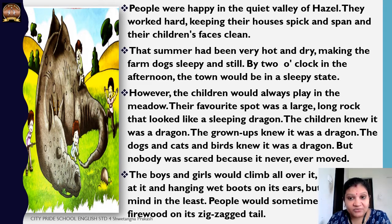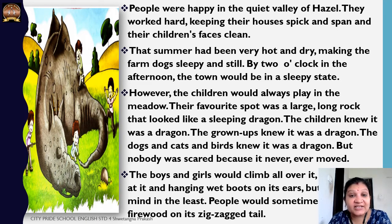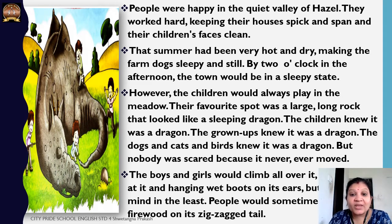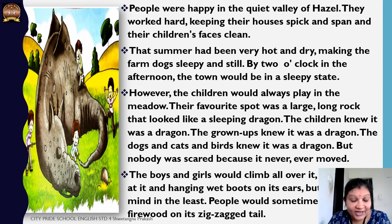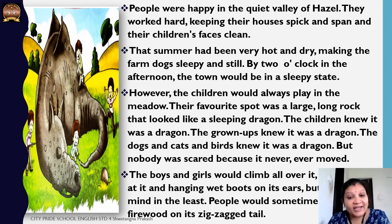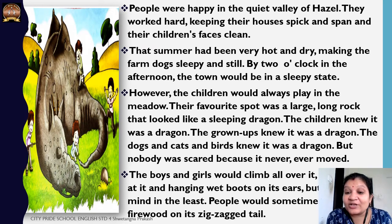The summer that year was very hot and dry, making the farm dog sleepy and still. When it is too hot, animals conserve energy and move less, so they are always sleepy. The children's most favorite spot for playing was the large long rock that looked exactly like a sleeping dragon. Everybody knew it — the grown-ups, the children, the cats, the birds, the dogs, all animals — but nobody was scared because it never moved, just lying there like a big rock shaped like a dragon.